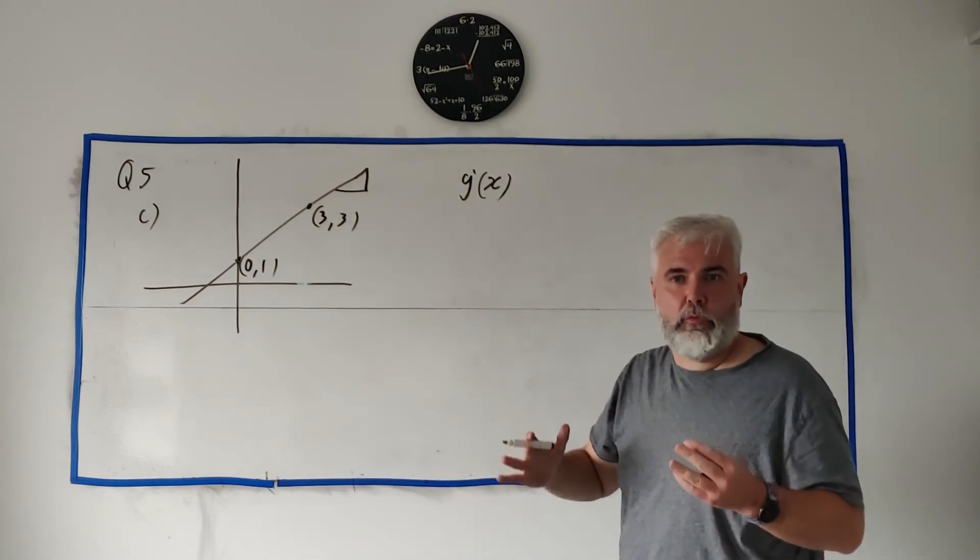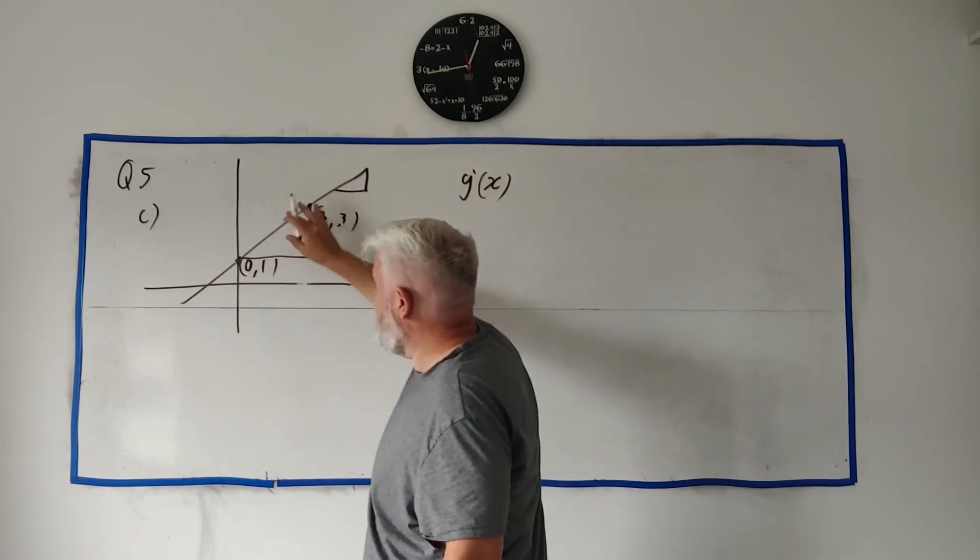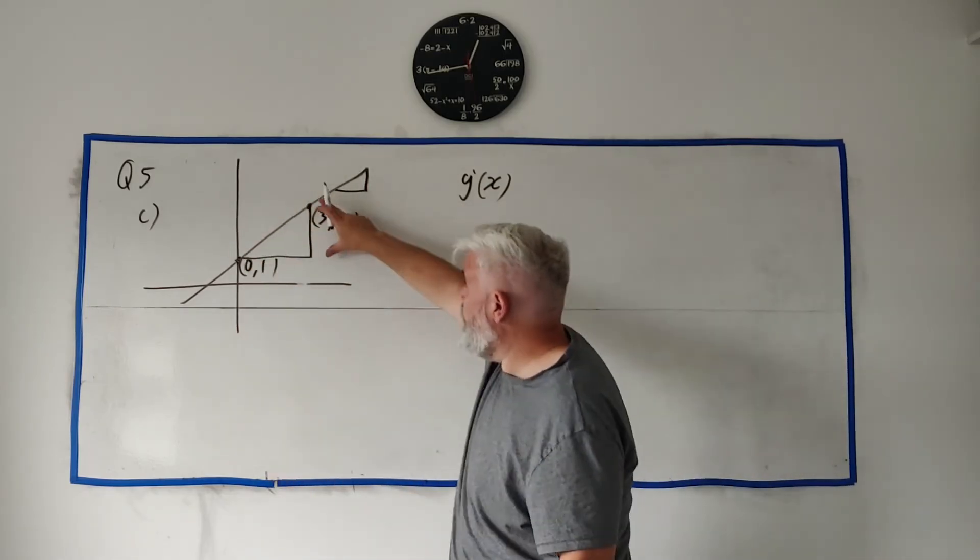This triangle is the easiest again because you want whole numbers. How tall is this?